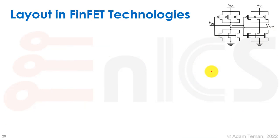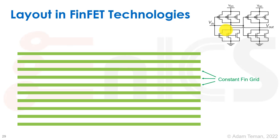Now let's discuss FinFET layout itself. We start with our constant fin grid. In FinFET, we always have this constant fin grid — the whole wafer is basically covered with these fins. We can't play with their sizes or the distances between them. They're made with the tightest pitch and the most advanced lithography available. Perpendicular to the fins, we place our gates. The gates are also on a very tight pitch and usually made with a minimum L.